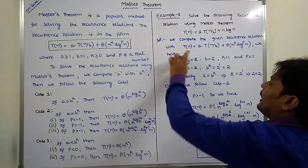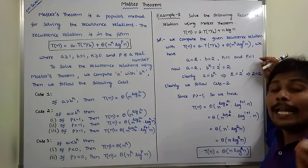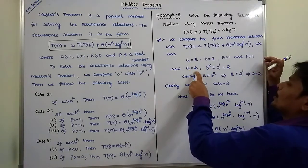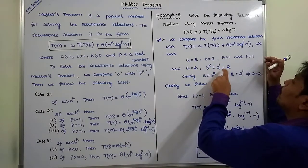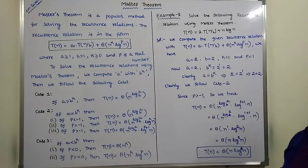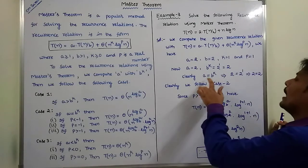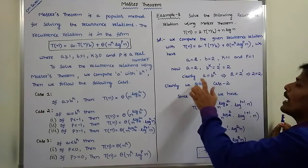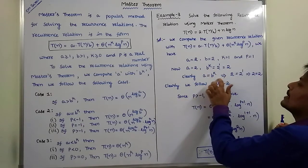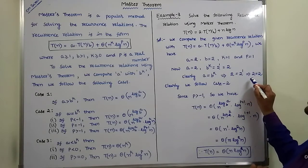After finding these four values, we now check the relation between a and b^k. Here a = 2 and b^k = 2^1 = 2. So the relation between a and b^k is a = b^k, meaning 2 = 2.